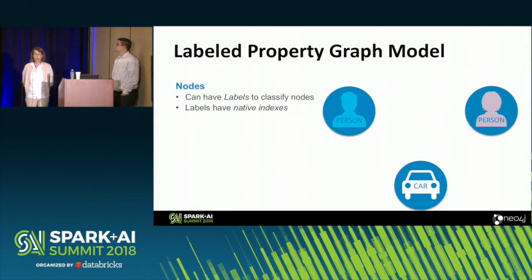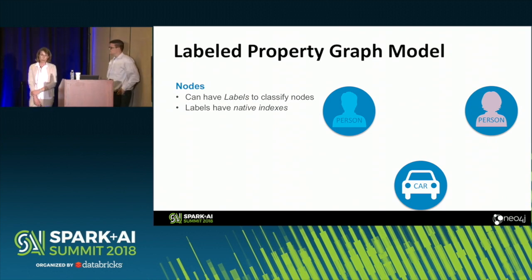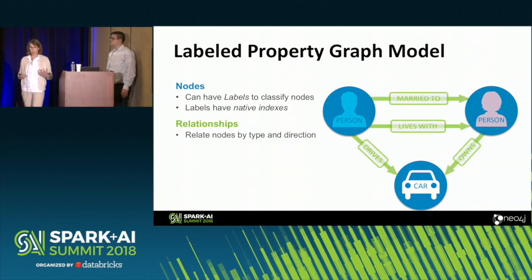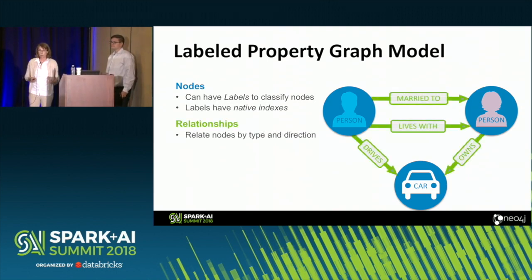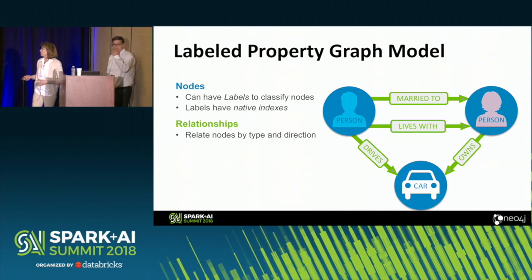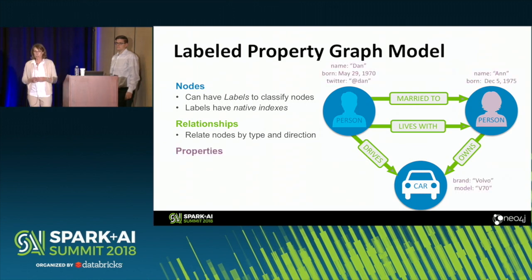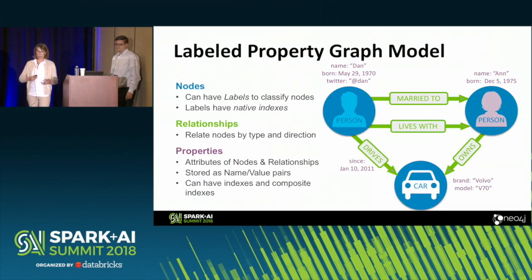A really quick overview for those of you that aren't super familiar with property graphs and label property graphs. Very simply, you've got nodes in a graph — people, cars — what you might normally think of as a noun. These can have labels to help classify them. There are relationships in graphs: basically how do things relate together. Maybe this person lives with somebody else, maybe they're married, they drive or own a car. Very simple concept of relationships.